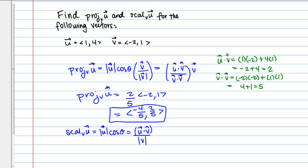We already know U dot V, we just calculated that. The only thing we need is the magnitude of V. The magnitude of vector V is going to be the square root of negative 2 squared plus 1 squared, which is the square root of 5.